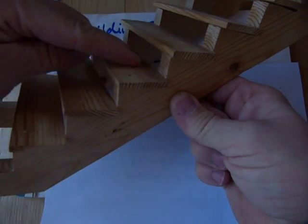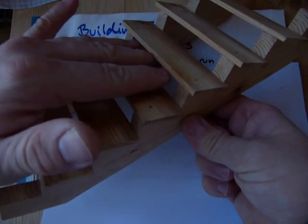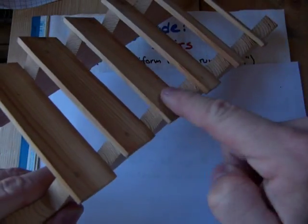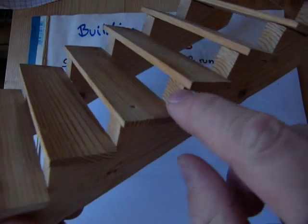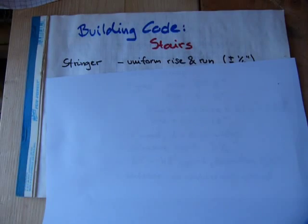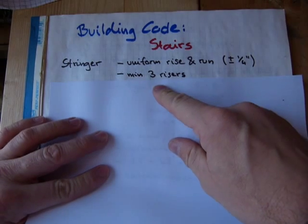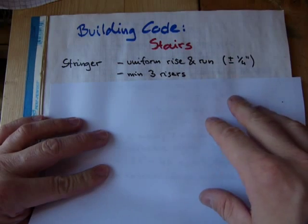On this stringer, you can find the treads, and in this configuration, this stair has an open riser here where you can see through. This set of stairs doesn't have a riser. It does have it on the stringer here, but it doesn't have a piece of wood here to be the riser there. The code requires that minimum three risers be on a set of stairs. If you only have two, build a ramp.